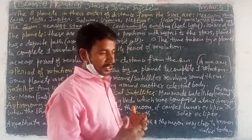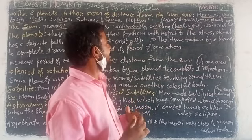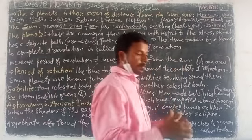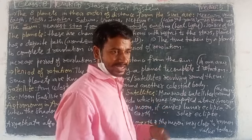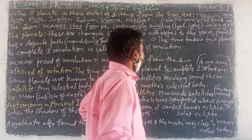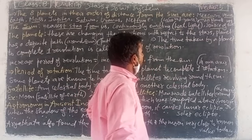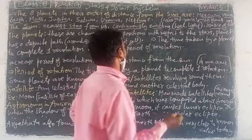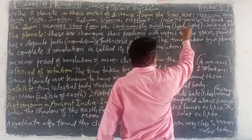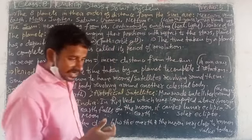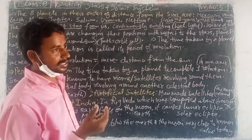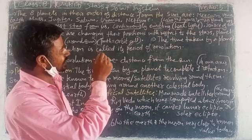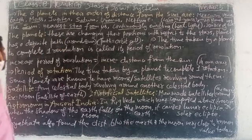The Sun emits an enormous amount of heat and light continuously. The Sun is the source of energy for all planets and plants. Its discovered age is assumed to be around 4500 million years.